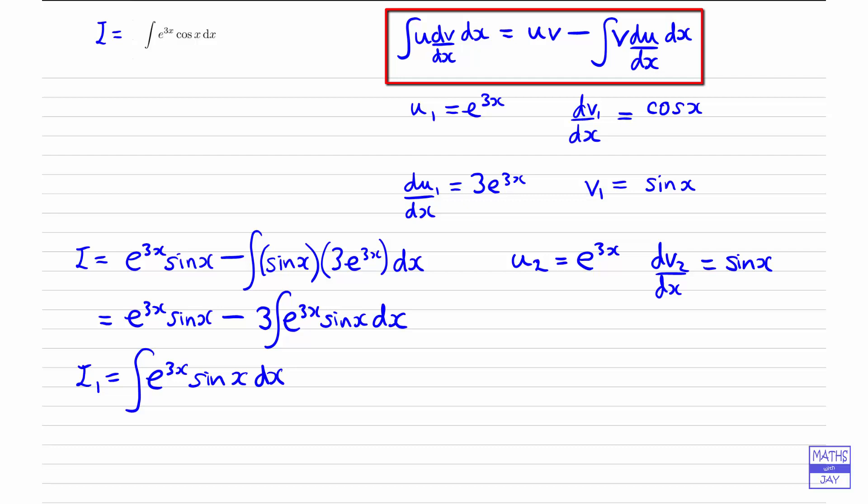And now, so that we can use the formula again, we're going to work out du2 by dx and v2. So differentiating u2, we get 3e to the 3x. And integrating sinx, we get minus cosx.